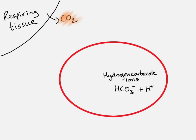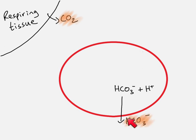Those hydrogen carbonate ions diffuse out of the red blood cell into the blood plasma. Here you can see those hydrogen carbonate ions — some of the carbon dioxide produced by respiration is transported around the body in the form of hydrogen carbonate ions.